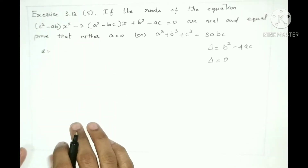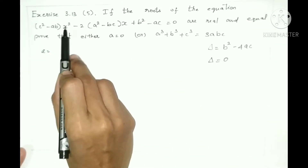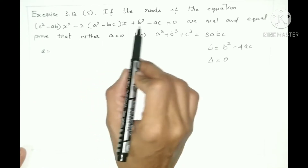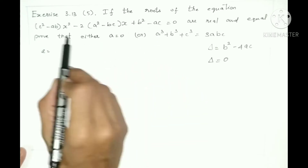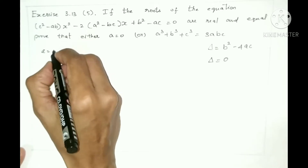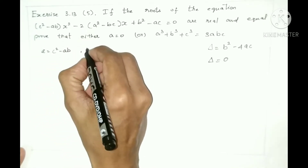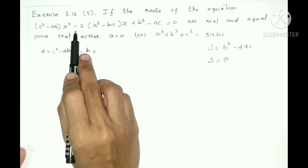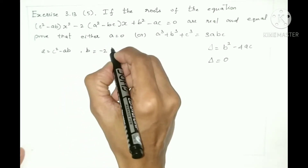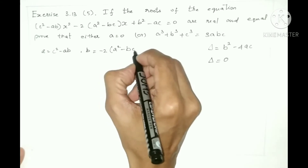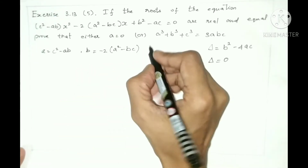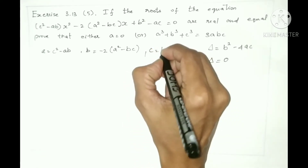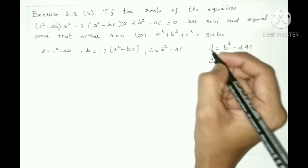So a, b, c values — in the equation, the coefficient of x squared is A, the coefficient of x is B, and the constant is C. So A equals c squared minus ab. Then B equals minus 2 into a squared minus bc. And C equals b squared minus ac.